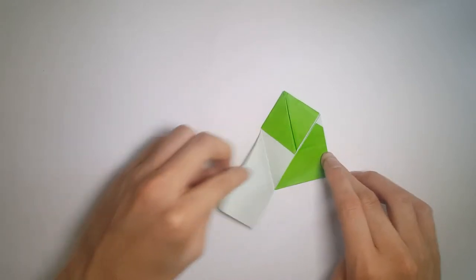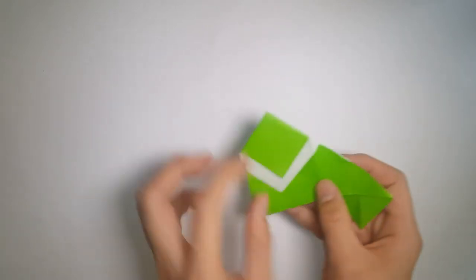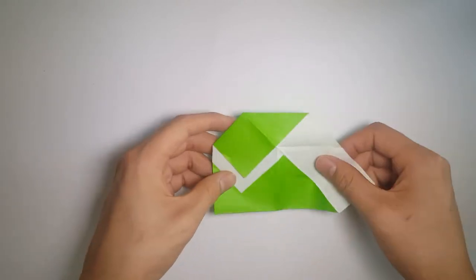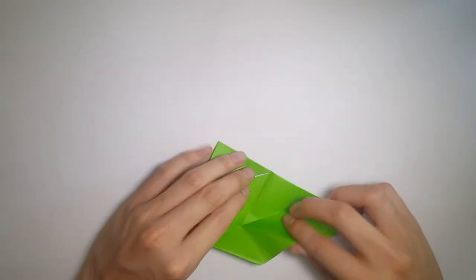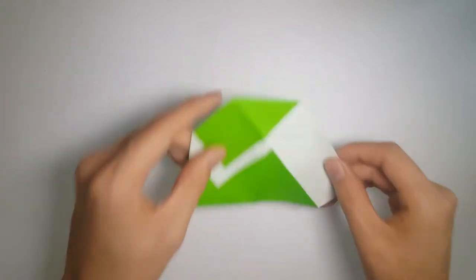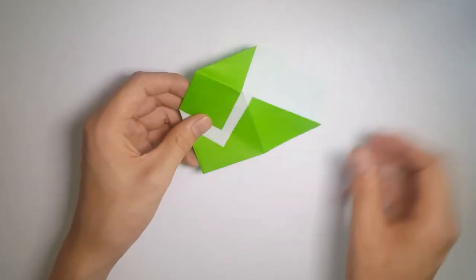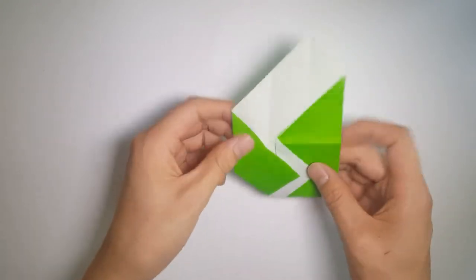Now when we turn it over, we'll unfold the entire right side. What we want to do is make a middle crease with the top triangle, so we're going to fold it backwards following the crease that starts from the bottom.